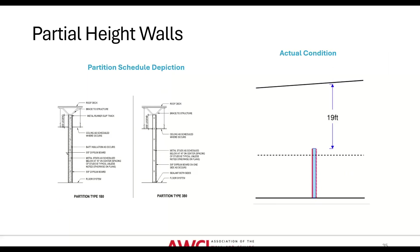Here's the same project. The partition types from the schedule on the left are shown as partial height with a small baby kicker about two feet up. But on the right is the actual condition: these partial height walls are actually 19 feet below the roof. If you do the math on a 45-degree kicker, that's somewhere in the 27-foot range, and we can all agree that's not very practical for a kicker.